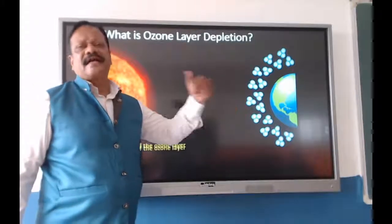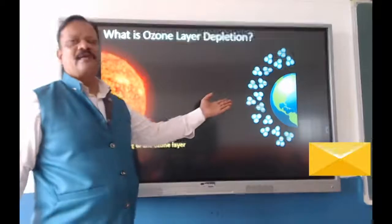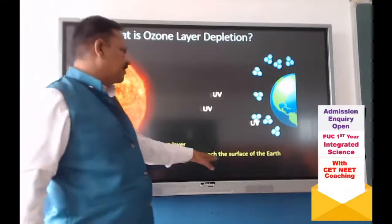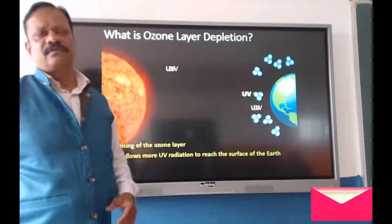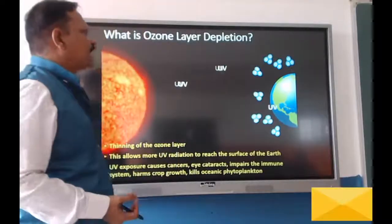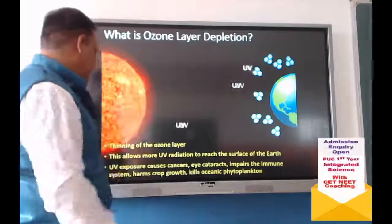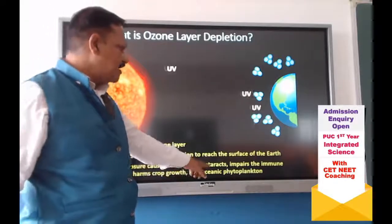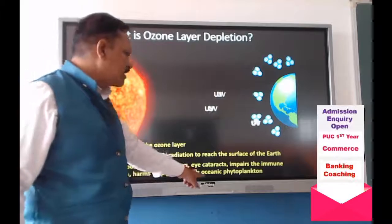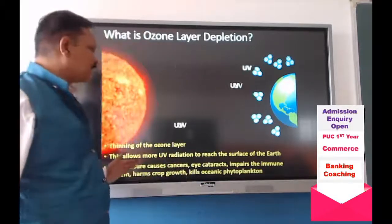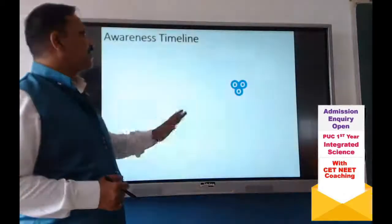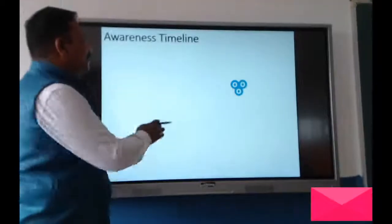Because of CFCs, the thinning of the ozone layer is observed. This thin ozone layer allows more ultraviolet radiation to reach the surface of the earth. When thinning of the ozone layer occurs, more and more ultraviolet rays reach the earth and are hazardous to all organisms. Ultraviolet exposure causes cancers, eye deterioration, impaired immune system, and harm to crop growth and oceanic plant life.